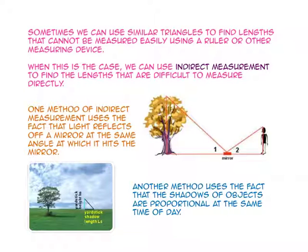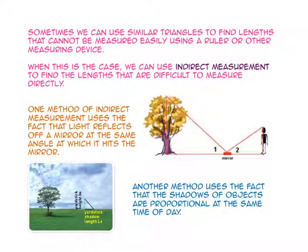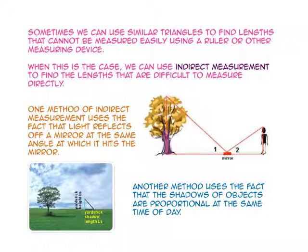Sometimes we can use similar triangles to find lengths that cannot be measured easily using a ruler or other measuring device. We can use indirect measurement to find lengths that are difficult to measure directly. One method uses the fact that light reflects off a mirror at the same angle at which it hits the mirror, so angle 1 would be congruent to angle 2. Another method uses the fact that the shadows of objects are proportional at the same time of day.